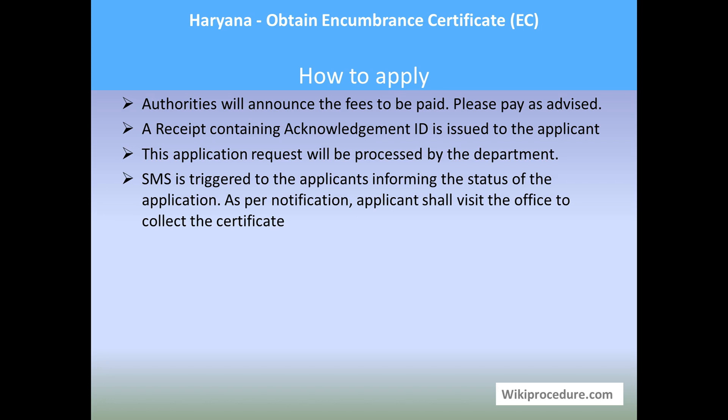Once you have paid the fees and submitted the documents, the application request will be processed internally by the department to get the extract of the encumbrance certificate for the period you have applied for. An SMS will be triggered and information about the status of the application will be sent to the applicant's mobile number. On final notification about the issuance of the encumbrance certificate, the applicant has to go to the respective office to collect it.